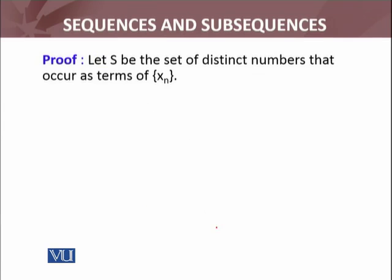Let S be the set of distinct numbers (terms) of the sequence XN. We have a sequence XN — what does it mean by the distinct numbers of that sequence?